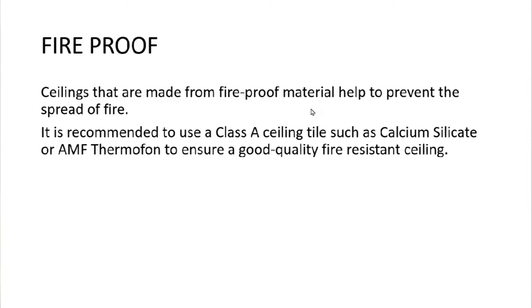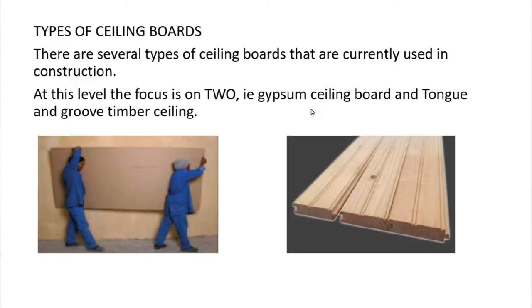Another advantage is fireproofing: ceilings made from fireproof material help to prevent the spread of fire. It is recommended to use a Class A ceiling tile, such as calcium silicate or AFM Thermophon, to ensure a good quality fire-resistant ceiling. These fireproof ceilings are found in banks, offices, or structures where fire is a risk. At Level 4 we focus on two types: the gypsum ceiling board and the tongue and groove ceiling board.